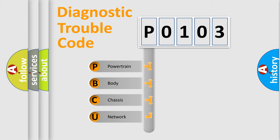We divide the electric system of the automobile into four basic units: Powertrain, Body, Chassis, and Network.